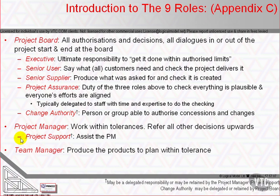The team manager's responsibility is to ensure production of products allocated to them by the project manager to an appropriate quality, in an agreed timescale, and at a cost acceptable to the project board. The team manager role reports to and takes direction from the project manager. The PRINCE2 project's heartbeat runs according to the pattern of activities described in the seven processes, which are designed to ensure that the project maintains a focus on the seven themes that healthy projects perform well — described in our next two videos.